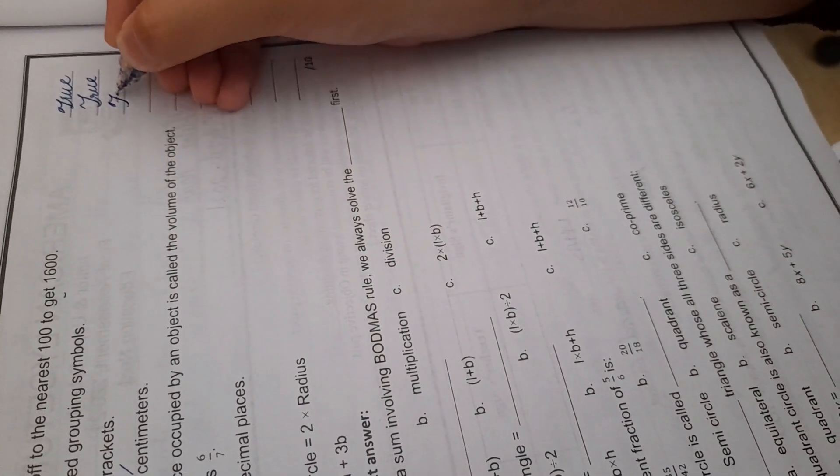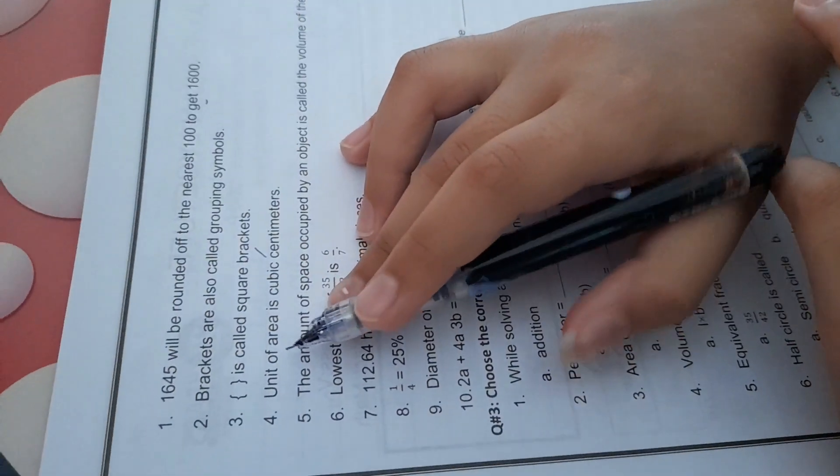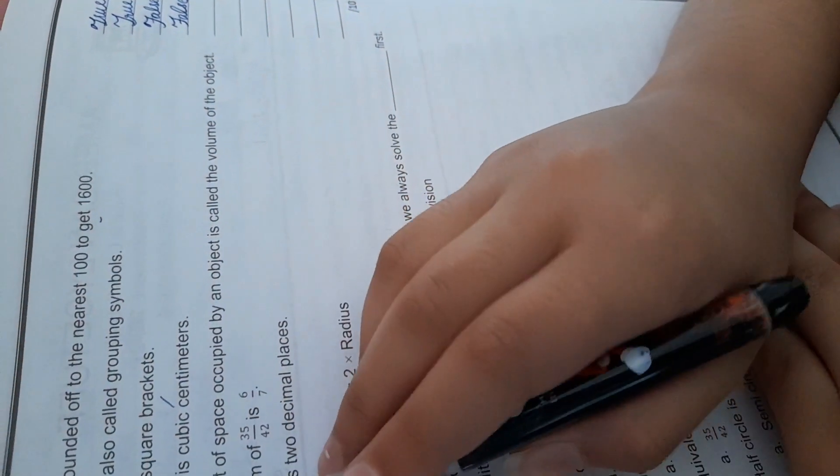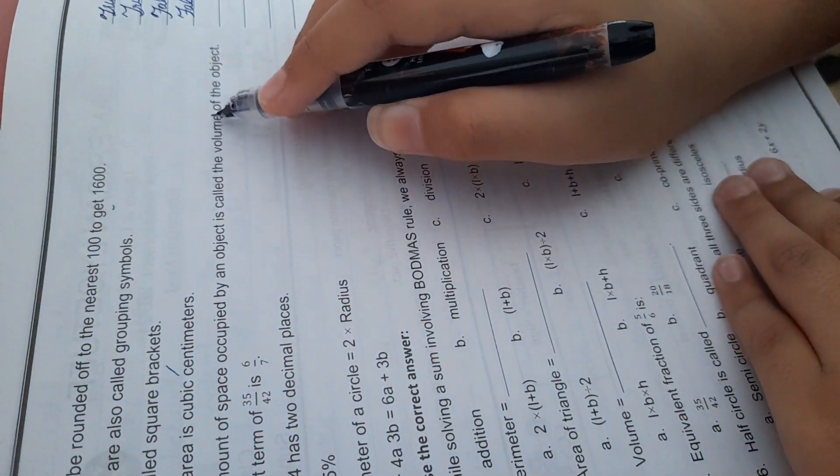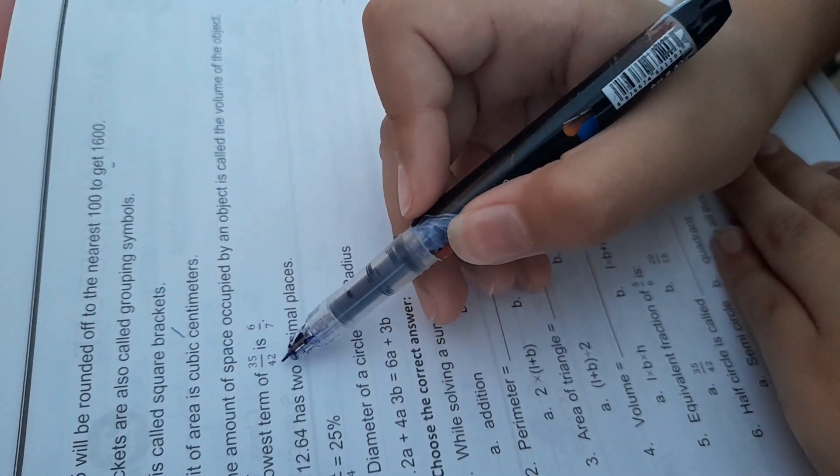Number three, these brackets are called square brackets. False. Unit of area is cubic centimeters. False. The amount of space occupied by an object is called the volume of an object. True. Lowest term of 35 by 42 is 6 by 7. False.